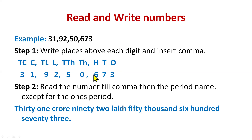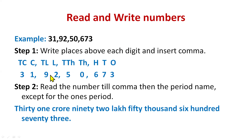After writing the places and inserting commas — three digits, then two digits, two digits, two digits — we move to Step 2: read the number up to each comma, then write the period name. So we read 31 crore, then 92 lakh, then 50,000. We are reading the number up to each comma and writing the period name.